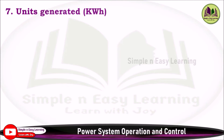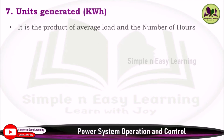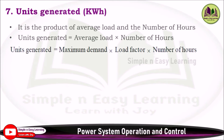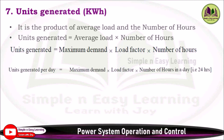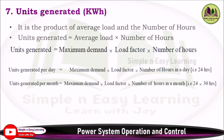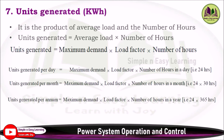Seventh: units generated. It is the product of average load and the number of hours. Since average load = maximum demand × load factor, we get: Units Generated = Maximum Demand × Load Factor × Number of Hours. For daily units, use 24 hours; for monthly, use hours in a month; for yearly, use hours in a year. Use this formula based on the given data.